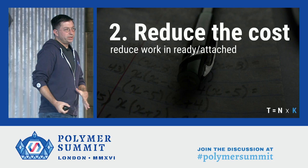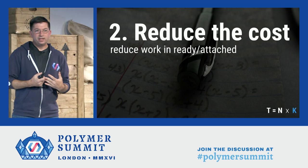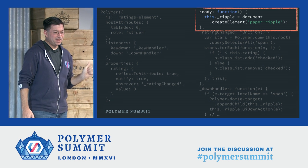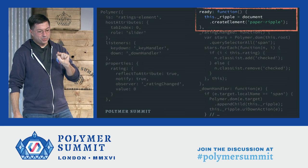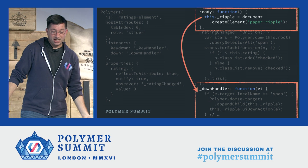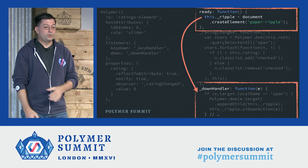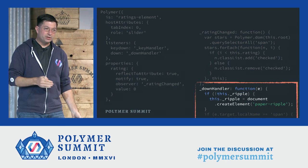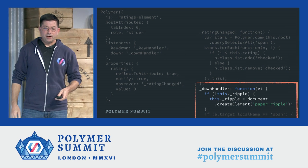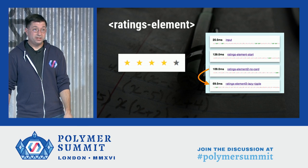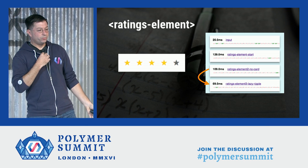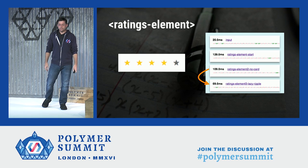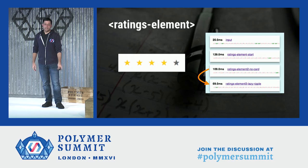The next technique is reducing the work done in ready and attached. These lifecycle methods are called before the initial render of the element. The paper-ripple was created in ready, but it's actually only used in the down handler. So it makes sense to do this work lazily and move the creation of the ripple element to the down handler. The first time the user presses down on a rating star, we make the ripple element and use it. This was a pretty significant improvement — not totally surprising since paper-ripple does complex work.